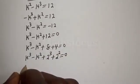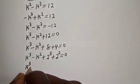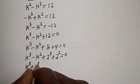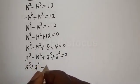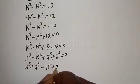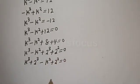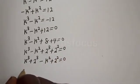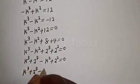Now let's compare: k raised to power 3 plus 2 raised to power 3, minus k squared plus 2 squared, is equal to 0.